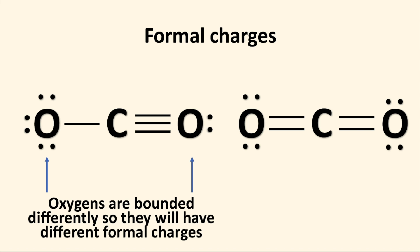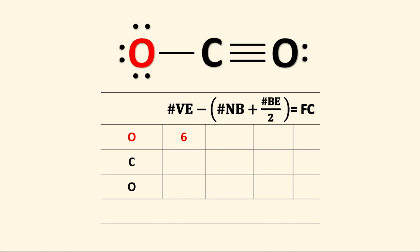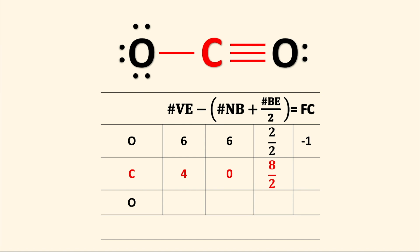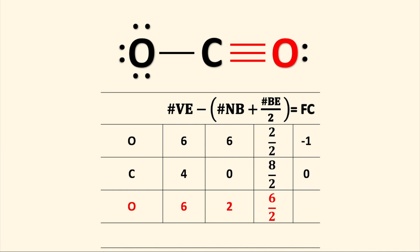Let's start with the leftmost oxygen and use the formal charge formula. Oxygen has six valence electrons, six non-bonding electrons, and two bonding electrons. When we calculate this out, this oxygen has a formal charge of negative one. Carbon has four valence electrons, zero non-bonded electrons, and eight bonding electrons. The formal charge for carbon is zero. The rightmost oxygen has six valence electrons, two non-bonding electrons, and six bonding electrons, which equates to a positive one. If we add up all the formal charges, they equal zero.